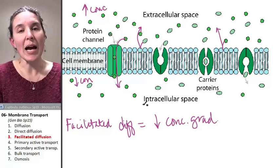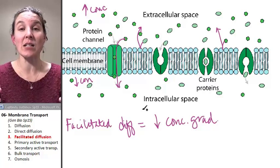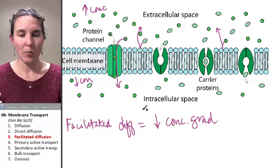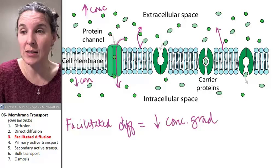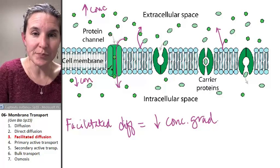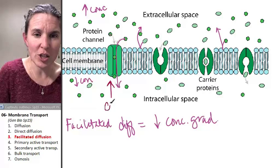There are two types of facilitated diffusion proteins that can help make this happen. The first type is a channel. This right here is a channel.